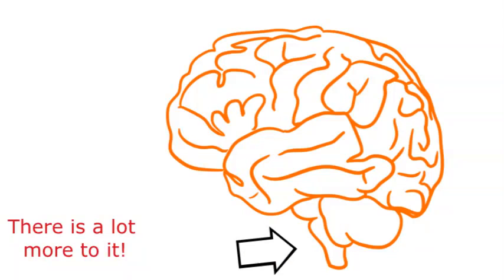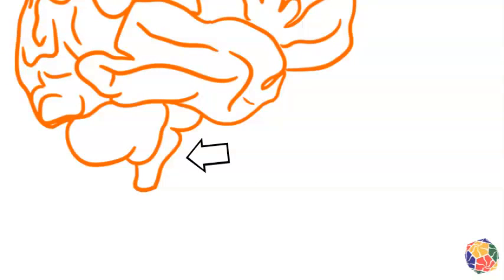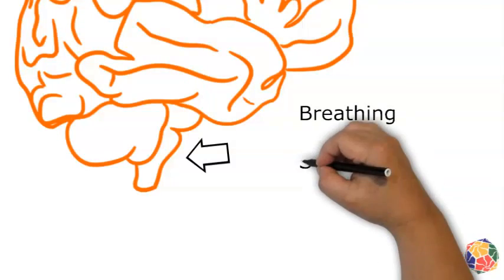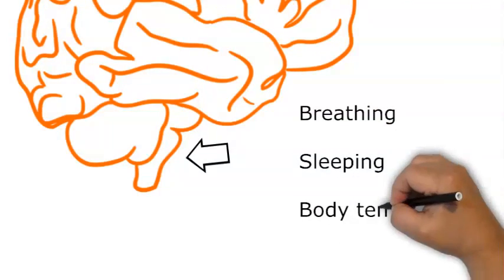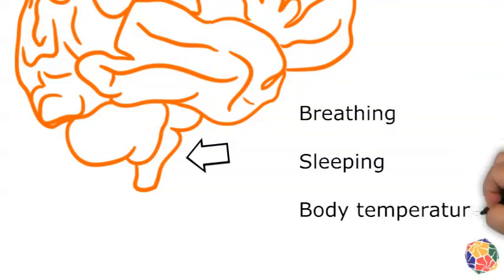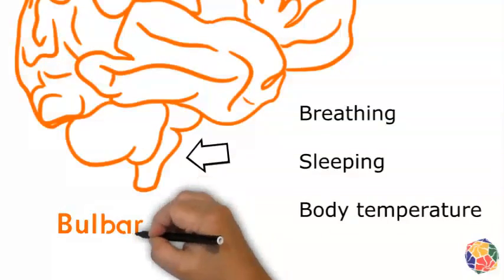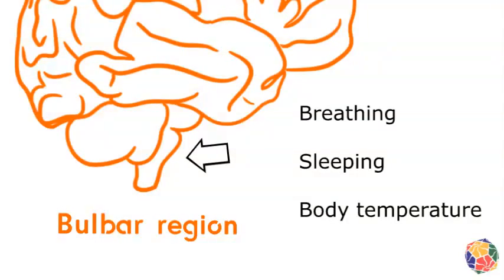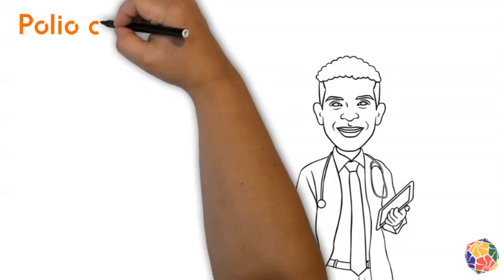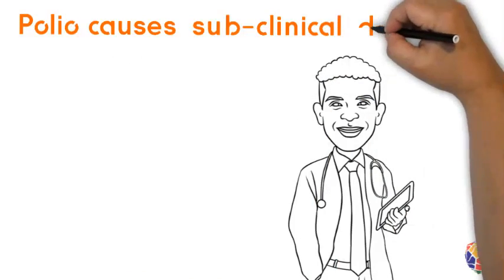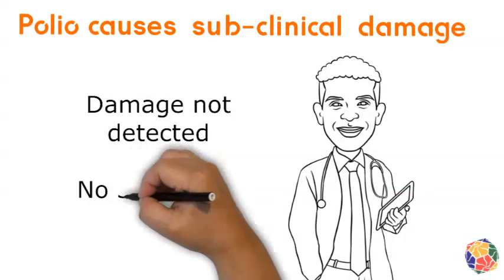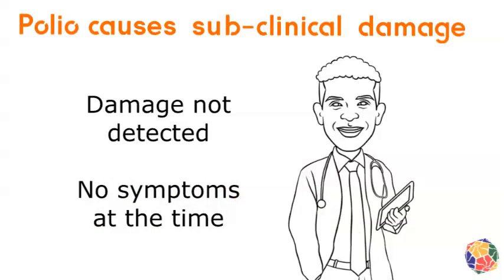The bulbar region of the brain is one such area. It controls many vital functions our bodies carry out, such as breathing, sleeping, and body temperature control. Damage to many different nerve cells may have occurred at the time of someone's acute polio infection, but it may have been undetected by the person and their doctors. This is called subclinical damage.